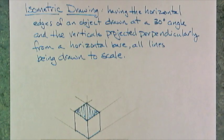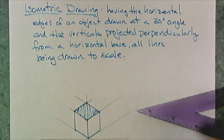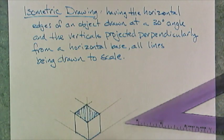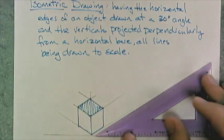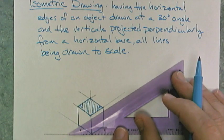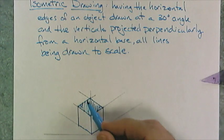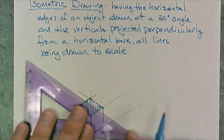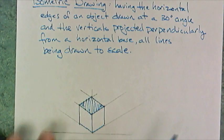Now for isometric drawings. Isometric drawing is having the same horizontal edges of an object drawn at a 30-degree angle and the vertical projection perpendicular from a horizontal base, all lines being drawn to scale. That 30 degrees, that's kind of a drafting thing, but it's a really nice easy number because we have these triangles that have a 30-degree angle. If here is a horizontal, like your horizon line, 30 degrees there, this one also is 30 degrees, this one in the back is 30 degrees. In fact, all these lines will be parallel. Likewise, these lines will be parallel. It's very easy to draw this way, and the vertical lines are all parallel too.